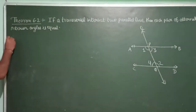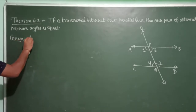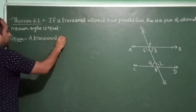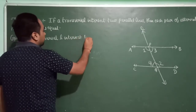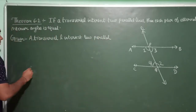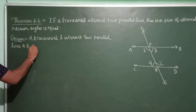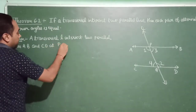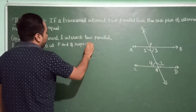Now I am writing the Given statement: A transversal L intersects two parallel lines AB and CD at points P and Q respectively.